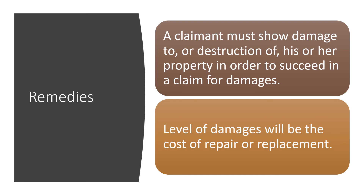Finally, once all elements of the tort are established and defences considered, we must consider remedies. A claimant must show damage to or destruction of their property in order to succeed in a claim for damages. The level of damages will be the cost of repair or replacement — this is not compensation for loss of amenity or loss of earnings as in negligence. It is simply making the thing right again, which is the whole idea of remedies in tort law: to put the claimant back in the position they would have been in had the tort not occurred.